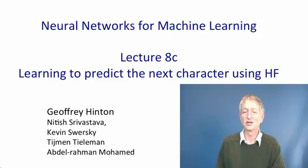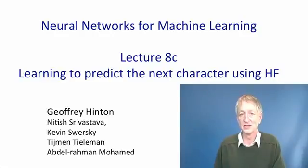In this video, we're going to see what happens when the Hessian Free Optimizer is used to optimize a recurrent neural network containing multiplicative connections, and the network is trained to predict the next character in Wikipedia.